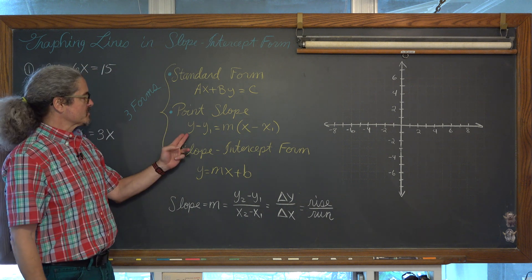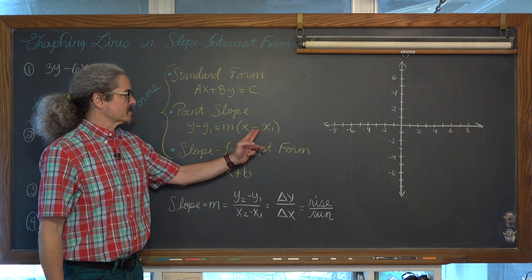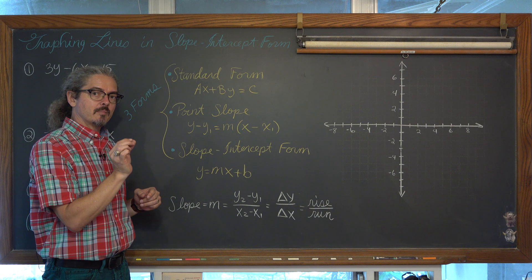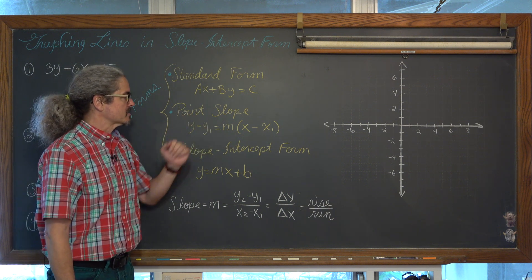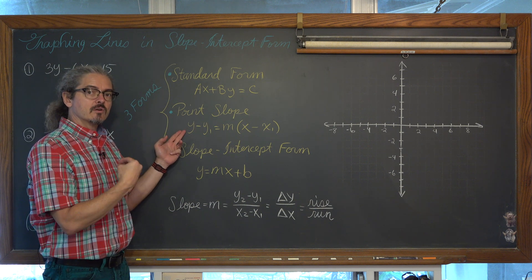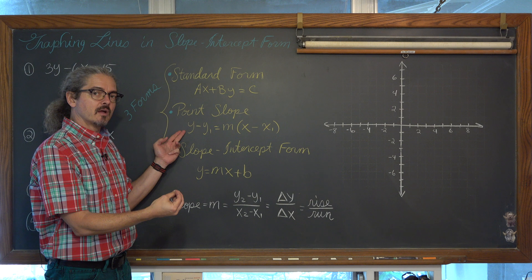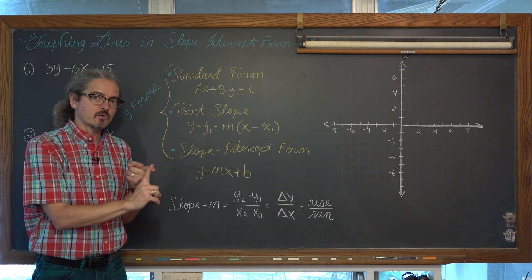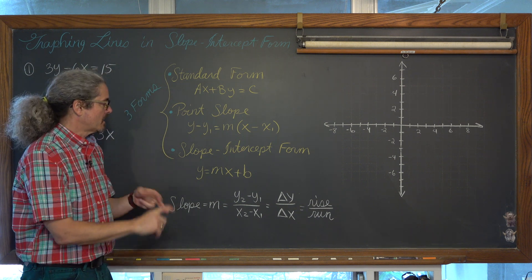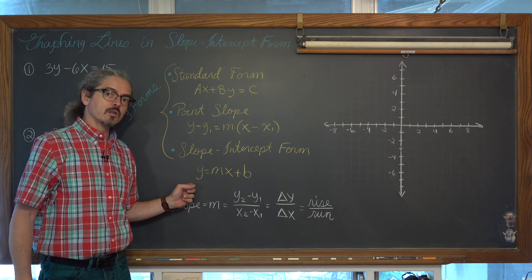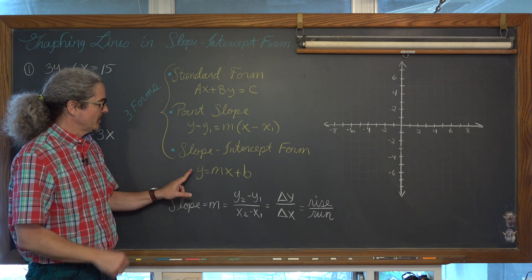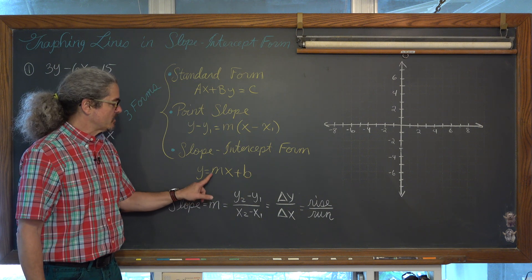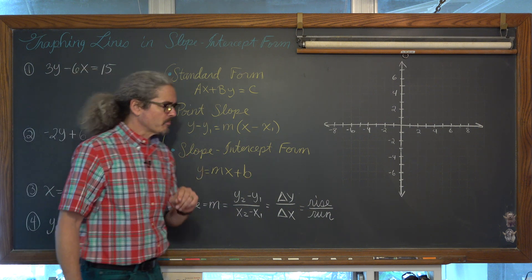We've got point-slope form of a line, which is y minus y-sub-one is equal to m times x minus x-sub-one. I like this form because it reminds us the minimum amount of information we need to write the equation of a line: a point and a slope. A lot of students prefer to use y equals mx plus b all of the time, whether they're creating an equation or graphing a line. And that is what this video is mainly about — slope-intercept form, where y is isolated by itself: y equals mx plus b.